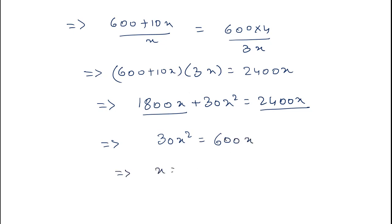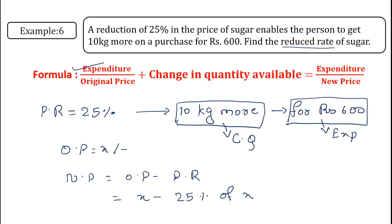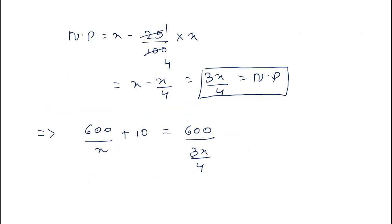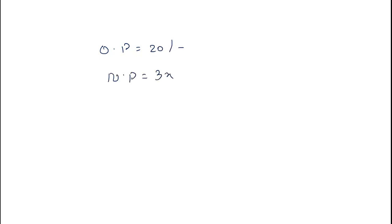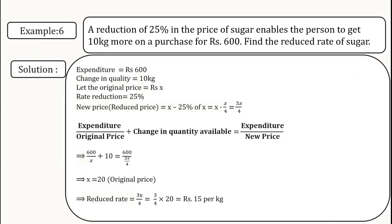Solving for x: x equals 600 upon 30, which equals 20. So x equals 20 rupees — this is the original price. Since the question asks for the reduced price, we use the new price formula: 3x upon 4. Substituting x equals 20: 3 upon 4 into 20 equals 3 into 5 equals 15 rupees. Therefore, the reduced price of sugar is 15 rupees per kg.